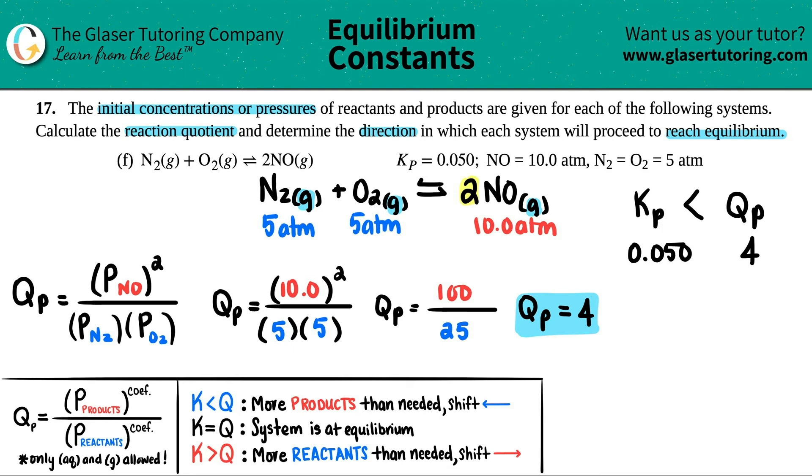And now whenever that happens, when the K is less than the Q, you have way more products than you should, so you got to get rid of them. And that's why you would go from the products to the reactants.